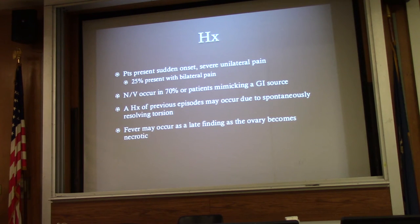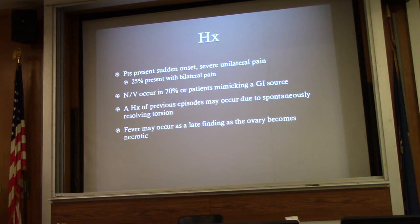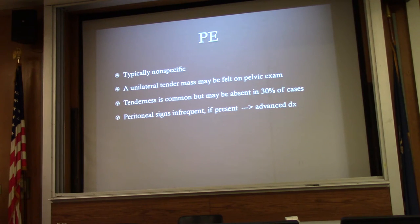Patients typically present with sudden onset unilateral pain; 25% of the time it can be bilateral, which further complicates the diagnosis. Nausea and vomiting occur in a large majority of cases and can be a red herring mimicking a GI source. History of previous episodes may occur due to intermittent twisting and untwisting. Fever is a late finding and usually indicates the ovary is already necrotic.